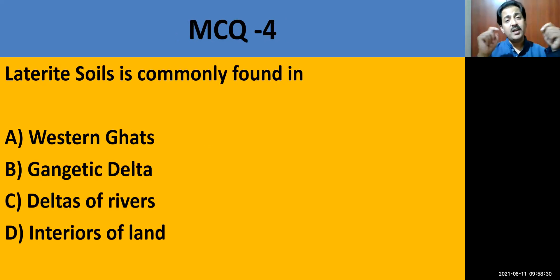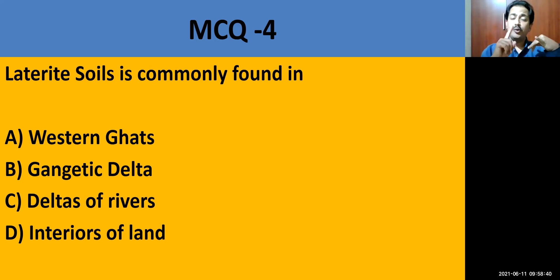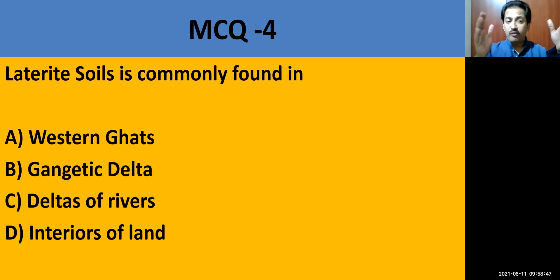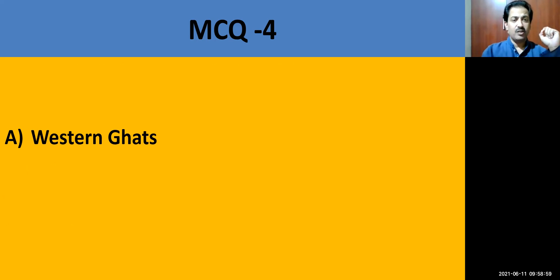MCQ question number 4: Laterite soil is commonly found in — Western Ghats, Gangetic delta, deltas of rivers, or interiors of land? The correct answer is Western Ghats. In the Western Ghats you have laterite soil.